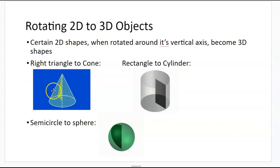A right triangle shapes a cone, as shown here. A rectangle shapes a cylinder, as shown right here.